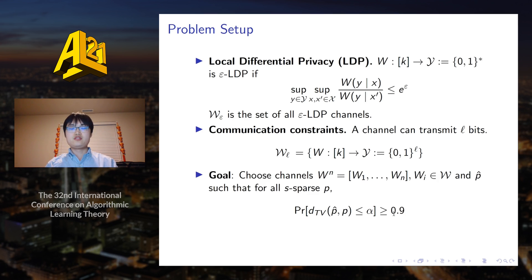The goal is that each user should choose a channel from a family of allowed channels and the server design an estimator such that for all S-sparse distributions P, we can guarantee that the estimation error is at most alpha in terms of L1 distance or TV distance with high probability. We're interested in the sample complexity, which means the least number of users such that a choice of channels and estimator exists.